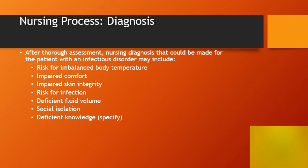After a thorough assessment, we move to nursing diagnosis. Possible diagnoses for this patient could include: risk for imbalanced body temperature, pain or impaired comfort, impaired skin integrity if there is a significant rash, risk for infection, deficient fluid volume, social isolation, and knowledge deficit. The specific diagnosis will depend on the individual assessment findings and what is going on with the patient.